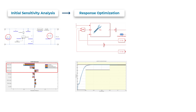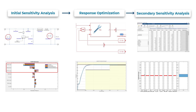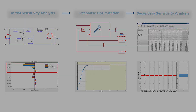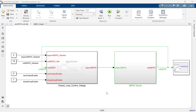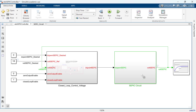And we'll conclude with a secondary sensitivity analysis to evaluate if the controller is robust to all possible combinations of parameter values and not just the influential ones, thereby gaining more confidence with the controller. Let's take a look at a demo.